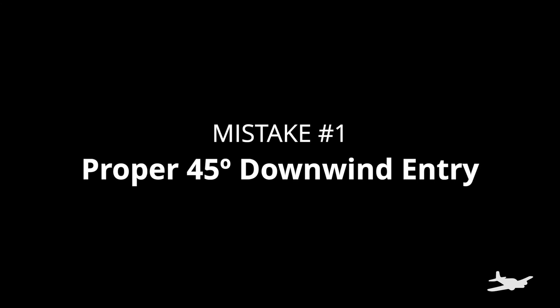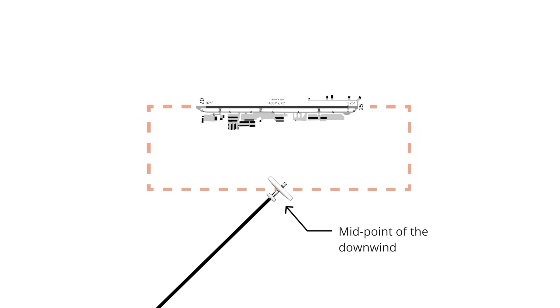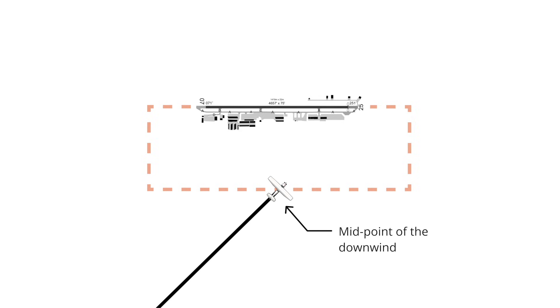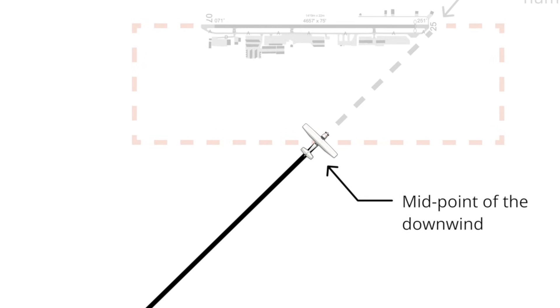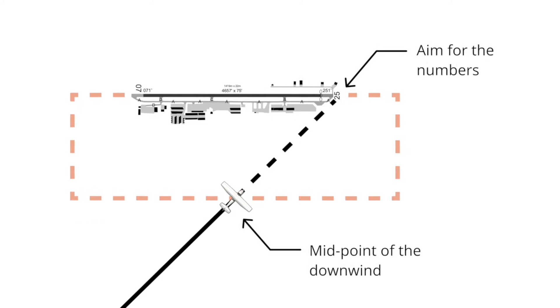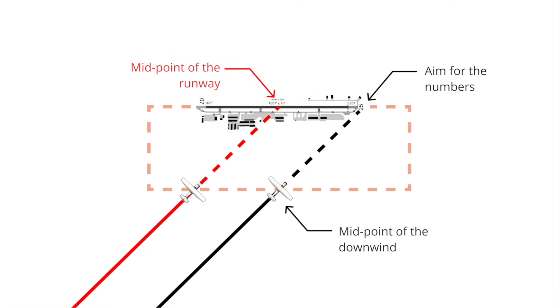The very first one is entering a non-towered field traffic pattern on the 45. Everybody should know that the 45 is meant to intersect the downwind right at the midfield point. However, most pilots intersect it at the crosswind turn. The reason they do that is because they're aiming at the middle of the runway. Look at this diagram — if this is a diagonal line coming from midfield to where you're entering on the 45, unless you're pointed over at the approach end, you are going to join the downwind closer to the crosswind. And that is actually a collision hazard.